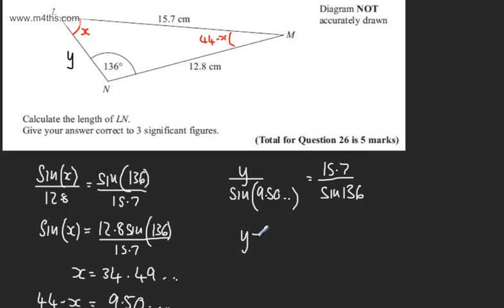So Y equals 15.7 sine of 9.50 dot dot dot, that's in the calculator, divided by the sine of 136 degrees.